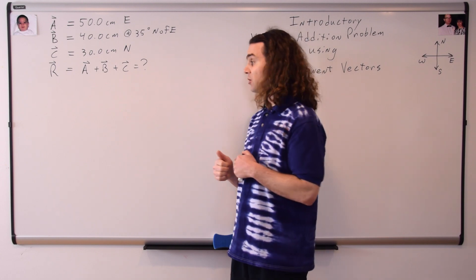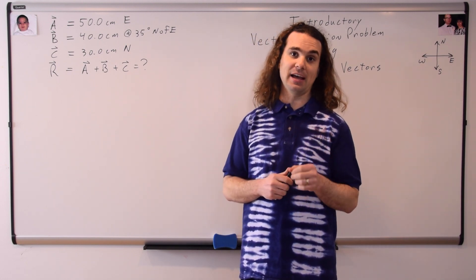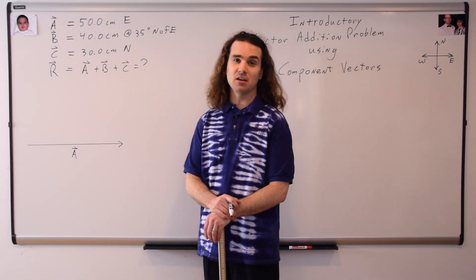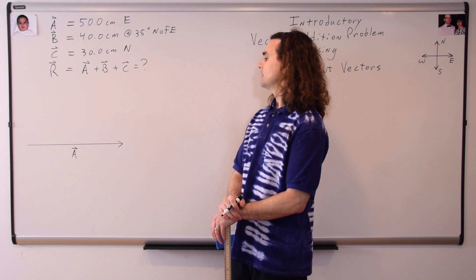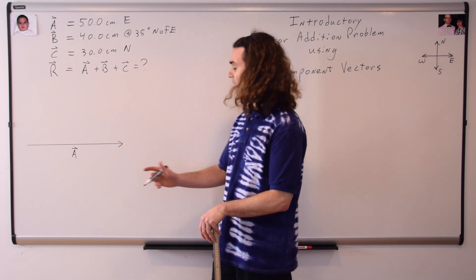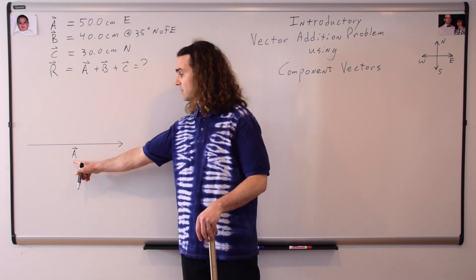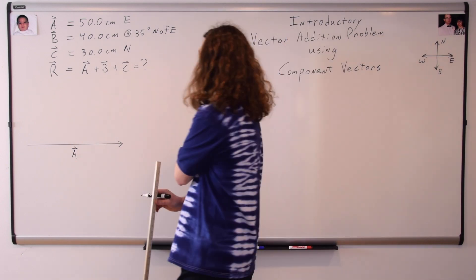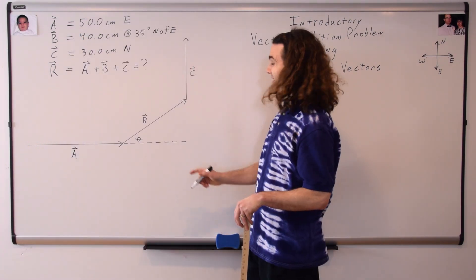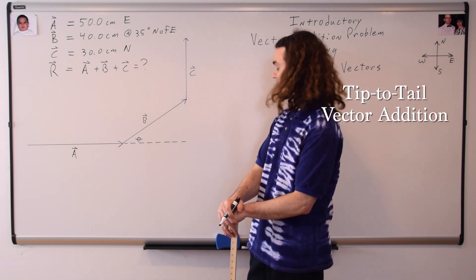Now, whenever you are doing a vector addition problem, you need to draw a vector diagram. I start by drawing vector A, which is 50 centimeters east, and notice that this vector is an arrow to indicate its direction, and it has a label A with the vector symbol over it to identify that this arrow is representing vector A. I place the tail of vector B on the tip of vector A, because this is tip to tail vector addition.